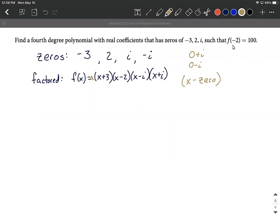We know from this information that if we plug negative two in for our x's this should equal 100. So 100 equals a times - now I'm going to replace each of the x's with negative twos. So negative two plus three, negative two minus two, negative two minus i, and negative two plus i.